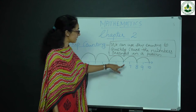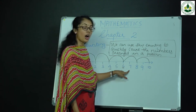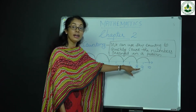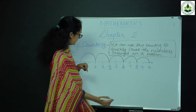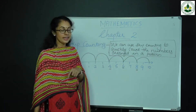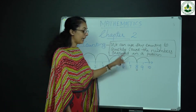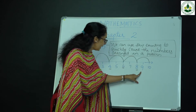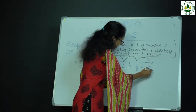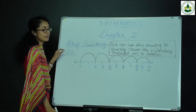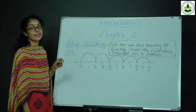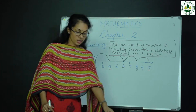Count again 2 times: 7, 8 — reach number 8. Then again count 2 times: 9 and 10. This is skip counting of 2s.